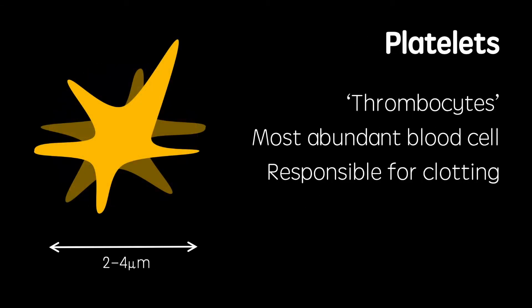And finally, platelets. Also known as thrombocytes, these cells are responsible for the clotting of blood. These are the smallest type of blood cell, at 2 to 4 micrometers in width, and are by far the most abundant.